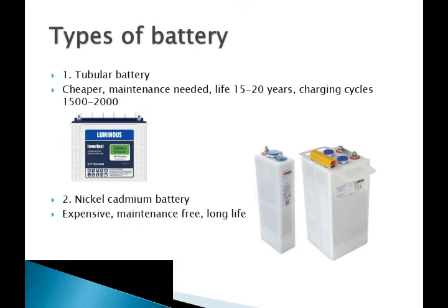There are two types of batteries available in the market. The first one is the tubular battery and the second one is the nickel cadmium battery. The tubular battery is cheaper compared to the nickel cadmium battery. Tubular batteries require maintenance, with a life cycle of 15 to 20 years and a charging cycle of 1000 to 1500. The nickel cadmium battery is expensive but offers good performance and requires no maintenance.